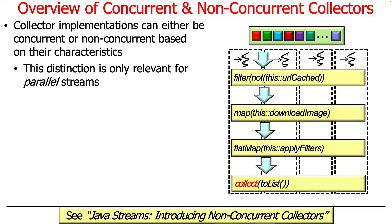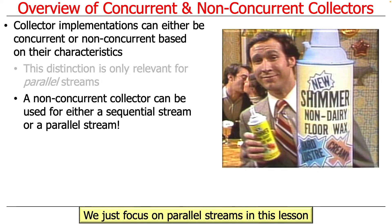The distinction between concurrent and non-concurrent collectors is really only relevant for parallel streams. We don't care for non-parallel streams because there's only one thread of control. Interestingly, a non-concurrent collector can be used for either a sequential or a parallel stream. We're going to focus on parallel streams to demonstrate the differences between the two.